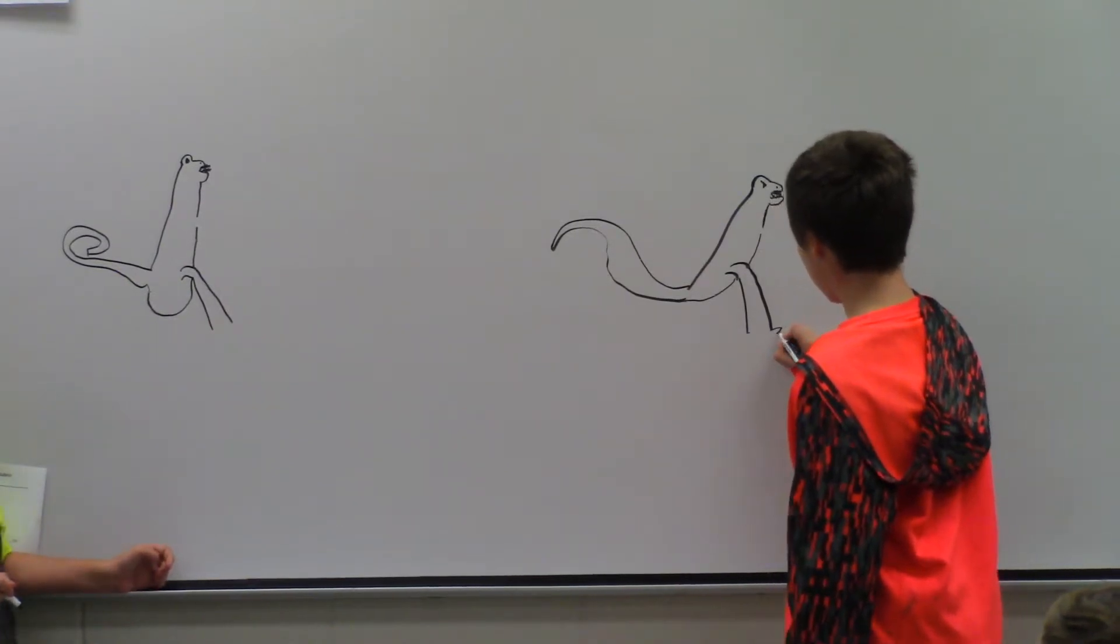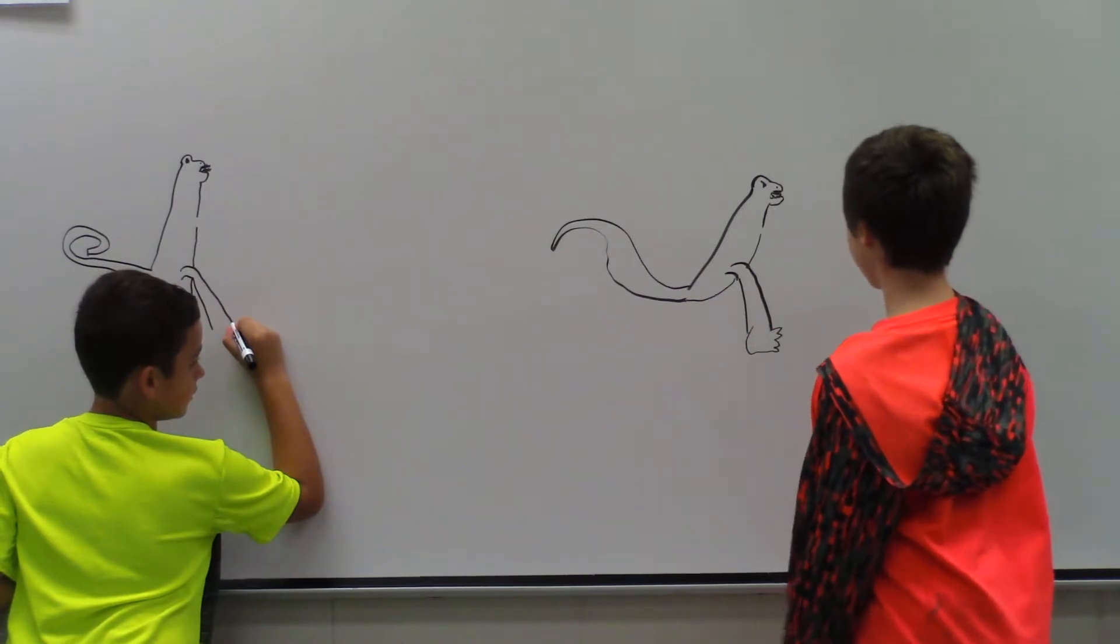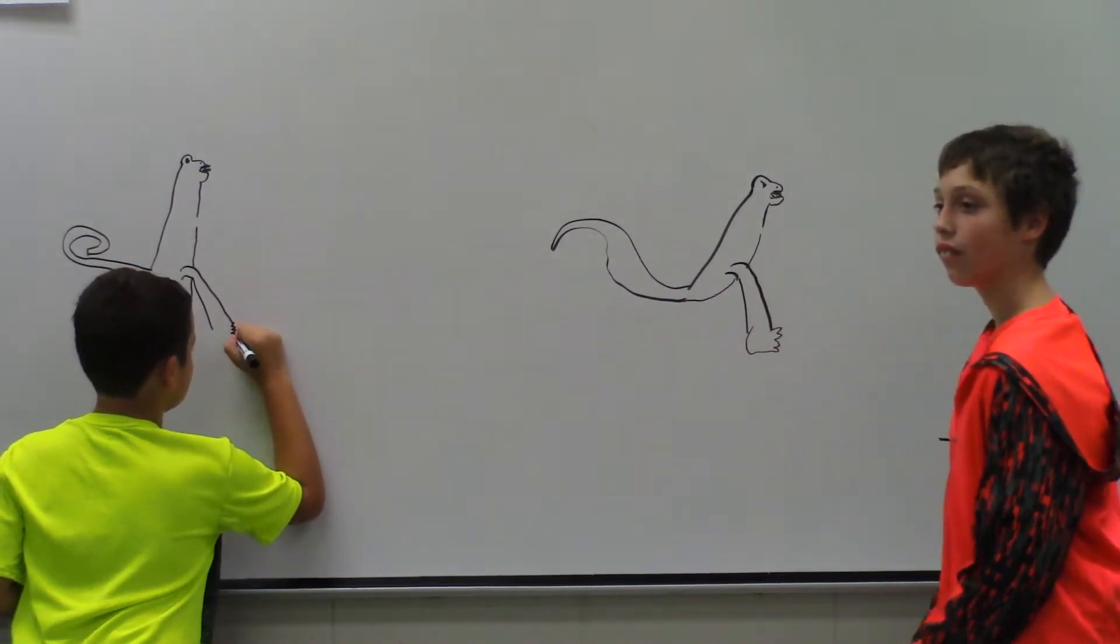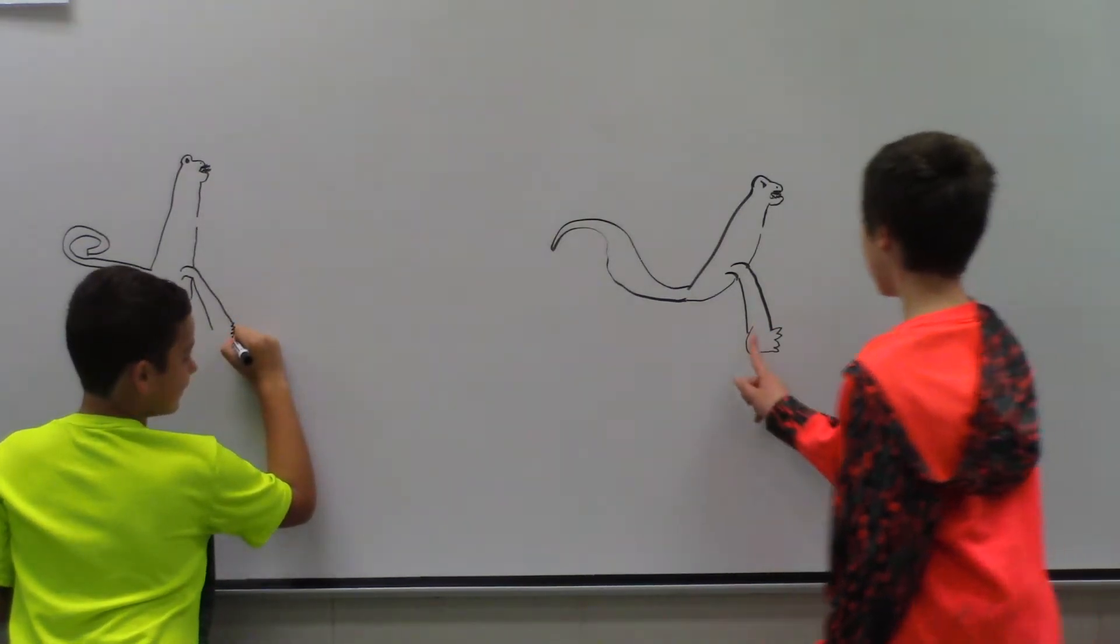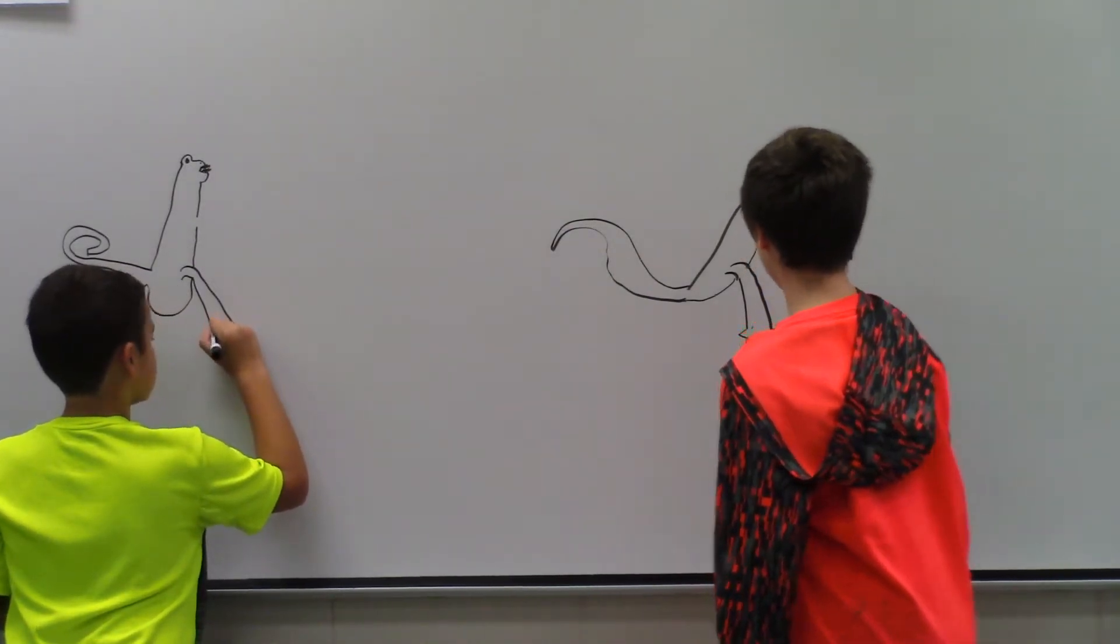And then he has four toes. So one, two, three, four. Oh, he also has like a little triangle detail on each toe.